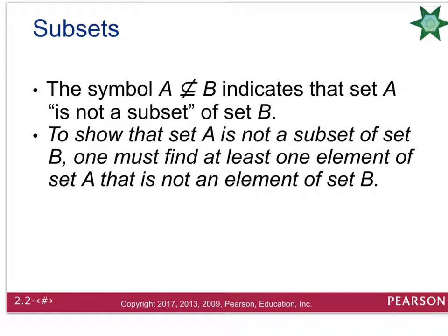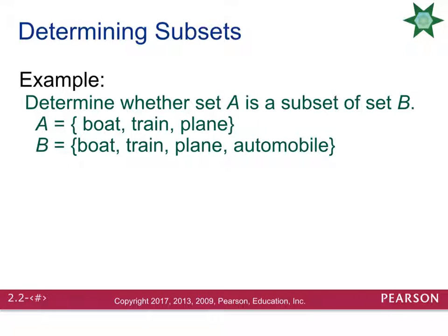If all the elements of A are not in set B, then we say it is not a subset. Notice the notation — they use a slash through the subset symbol to show that A is not a subset of B. If you are asked to prove that something is not a subset, all you have to do is find one element that is listed in set A but does not appear in set B.